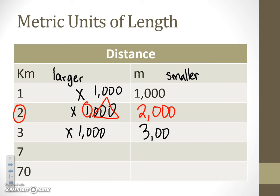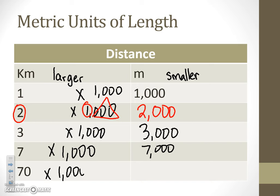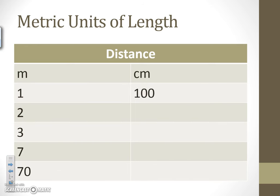So 2 times 1,000 would be 2,000 meters. If we did 3 times 1,000, we would get 3,000 meters — so 3 kilometers is equivalent to 3,000 meters. If we did 7 times 1,000, we would get 7,000 — so 7 kilometers is equivalent to 7,000 meters. And if I had 70 kilometers and wanted to convert to meters, I would simply multiply by 1,000 and get 70,000 meters.